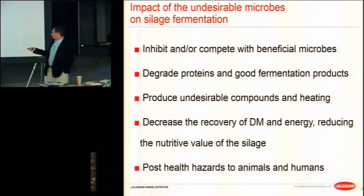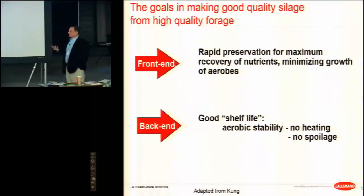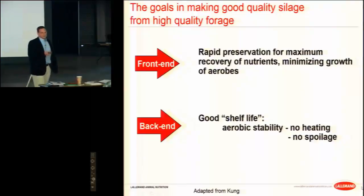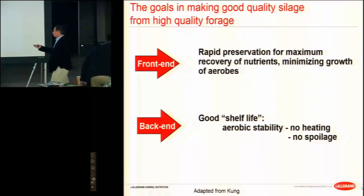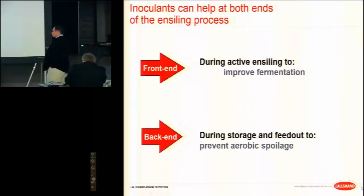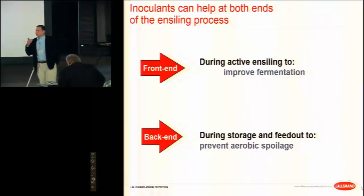We also have a potential problem with health hazards to humans and animals. This brings us to the two goals of good silage making. On the front end we want rapid recovery of nutrients and dry matter, shut down plant enzymes, and inhibit aerobic microorganisms. On the back end we want good feed out and storage characteristics - good aerobic stability, meaning no or minimal heating and spoilage. Inoculation can help achieve both goals.